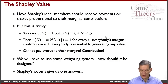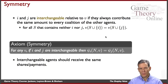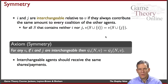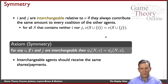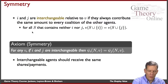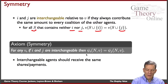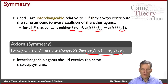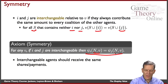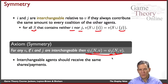Shapley's axioms give us a handle on this. The first axiom is a very simple one that pretty much any rule you'd think of would satisfy. If we think of two different members of a society, say i and j, if they contribute the same thing to every possible coalition they could be a member of — they're completely interchangeable — then they should receive the same allocation. If Ψ is the way we're dividing up value, we should give the same thing to i as to j when they're completely interchangeable.